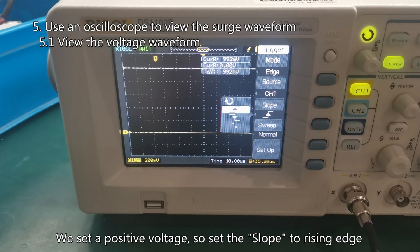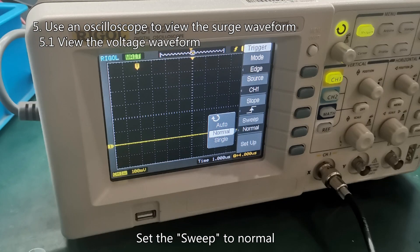We set a positive voltage, so set the slope to rising edge. Set the sweep to normal.